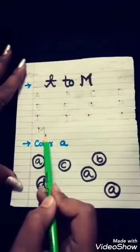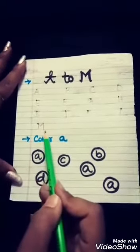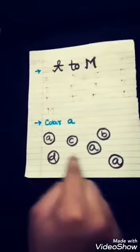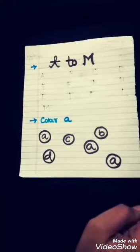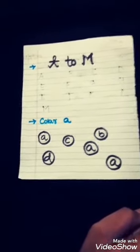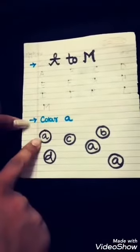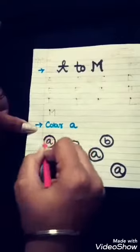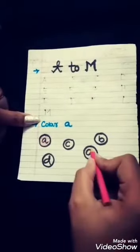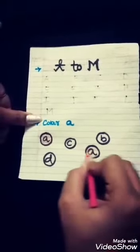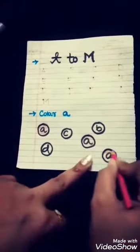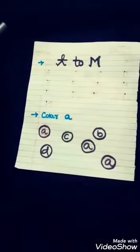The third question for the day is to color small 'a'. You have to find the small 'a' in these circles and color the circle that has the letter 'a'. Let's see where the small 'a' is — here it is, and we are coloring it. Let's find the other 'a' — there it is, let's color it. One more time — is there any other 'a' left? Yes, the last one.